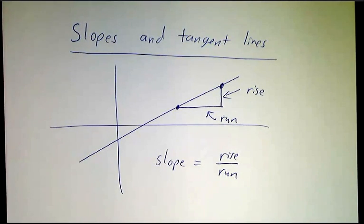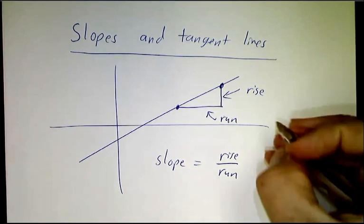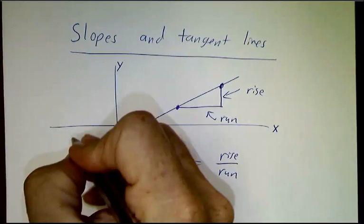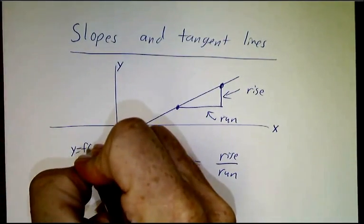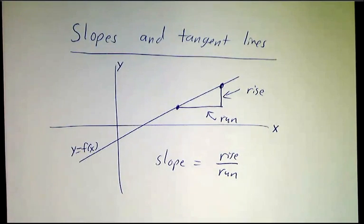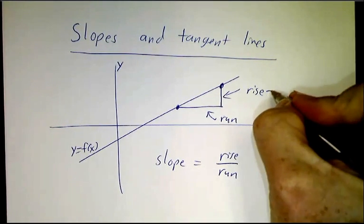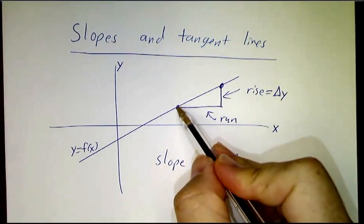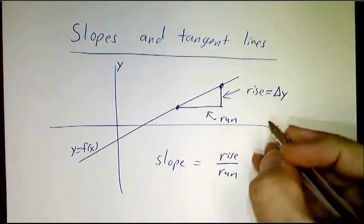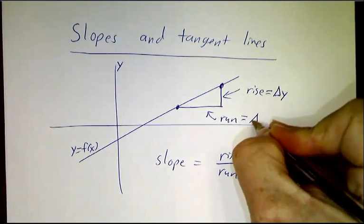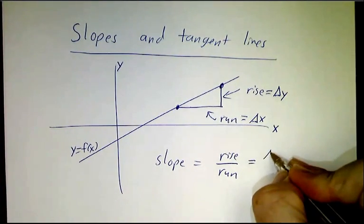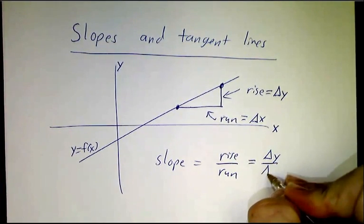Now, to use the notation that we've been using before, if this is the x-axis and this is the y-axis and this is the curve y equals f(x) – it happens to be a straight line but it's a function – then the rise is what we call the change in y. It's how much y changed when you went from here to here, and the run is the change in x. So the slope is delta y over delta x.